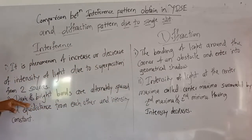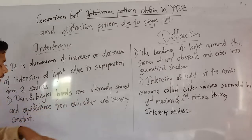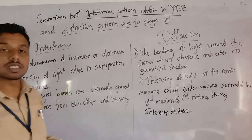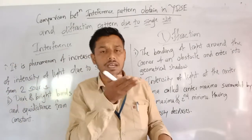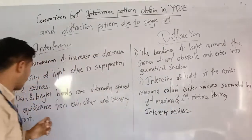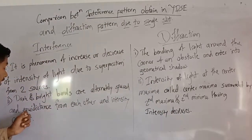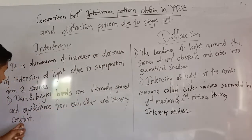Moving to the first comparison point: in the interference pattern, dark and bright bands are alternately spaced and equidistant from each other, and the intensity of the bright bands is constant throughout.